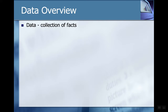Data can take on a lot of different forms. For example, the contents of a book is data. But in this particular course, the scope is really going to be digital data — the type of data we have digitized and that is processable by a computer.